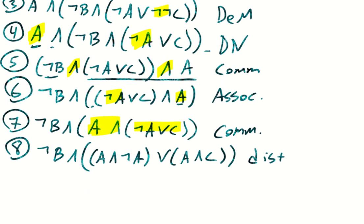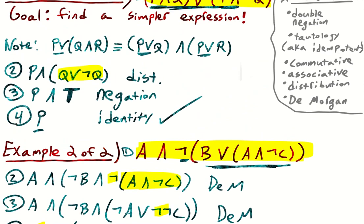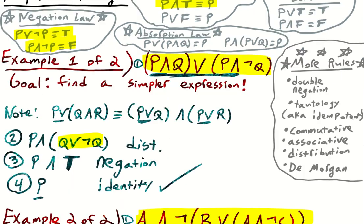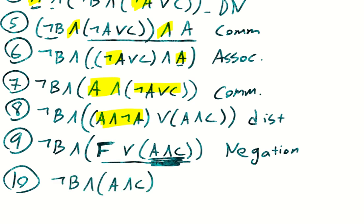And now we have this a and not a, so we have the negation law — that's necessarily false, it's a contradiction. So for line nine, we get: not b and (false or (a and c)), by the negation law. Then for line ten, we have the identity law, because if you have false or such and such, it's ultimately equivalent to that expression. So we can say: not b and (a and c), by identity.